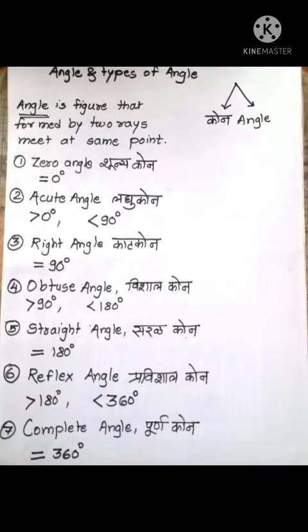Third type of angle is right angle. The angle whose measure is equal to 90 degree.